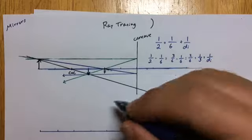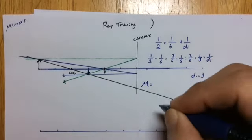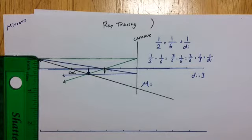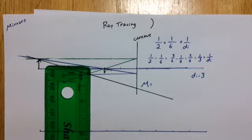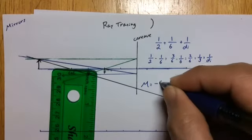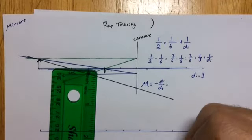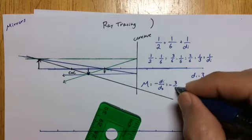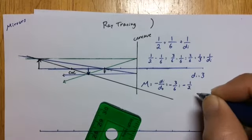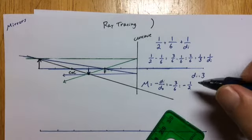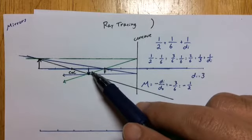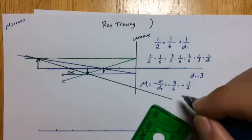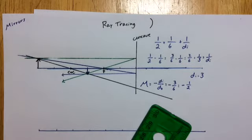We can also calculate magnification: m = h_i/h_o = −d_i/d_o = −3/6 = −1/2. The image is half the size of the original object, and the negative sign means it's flipped upside down. It's also a real image because light actually travels to that location. And that's what we see in the diagram — a smaller, inverted real image.